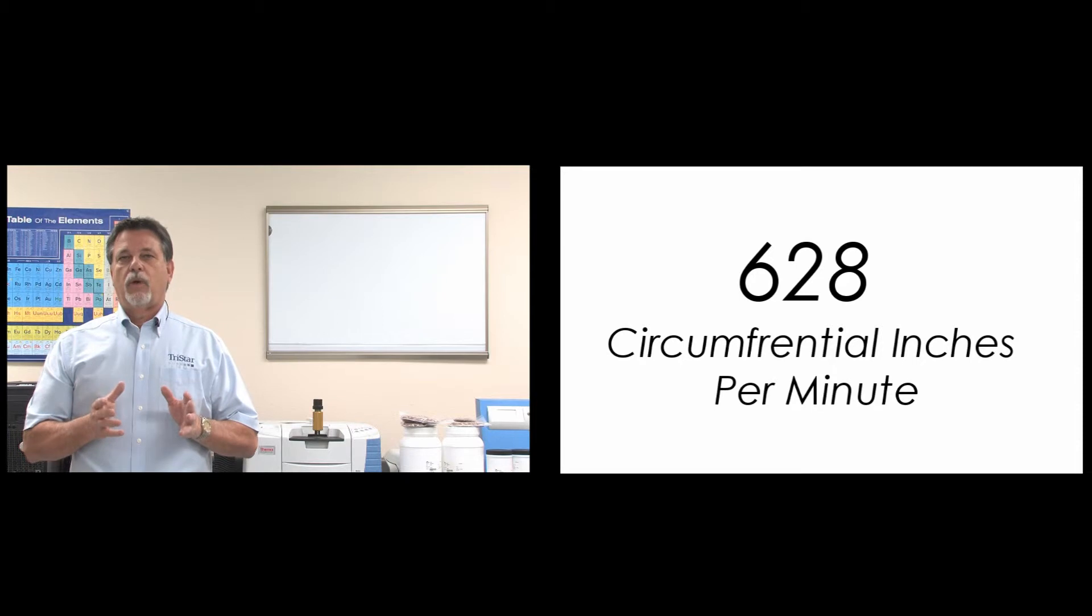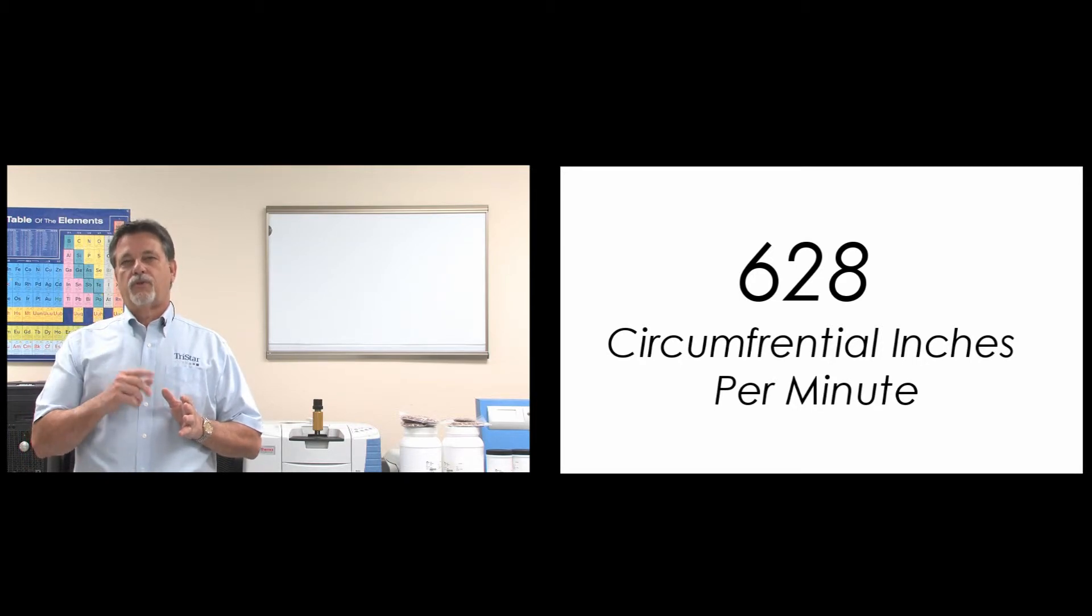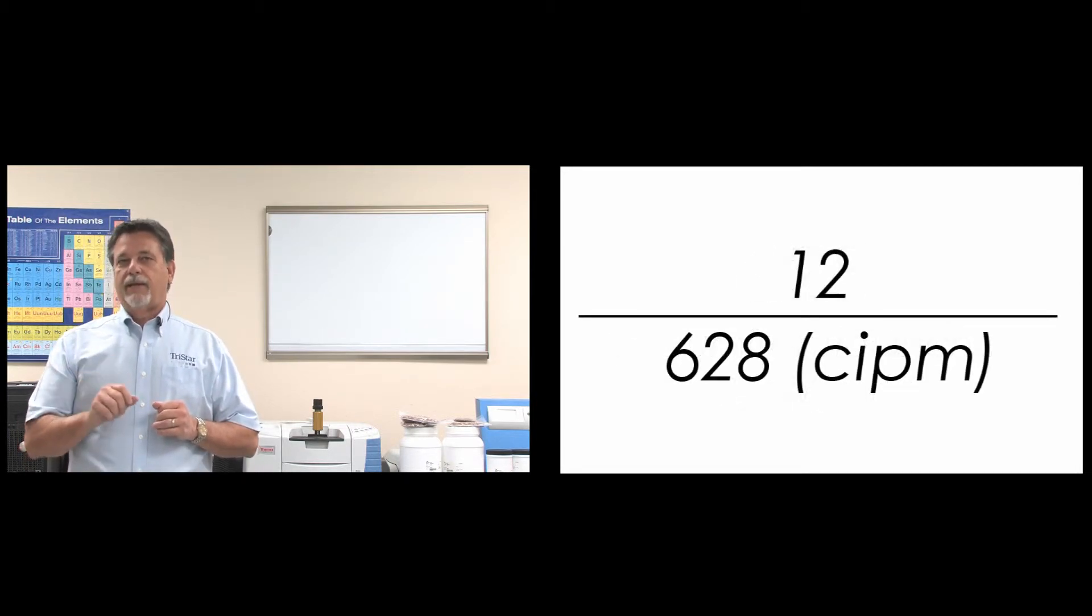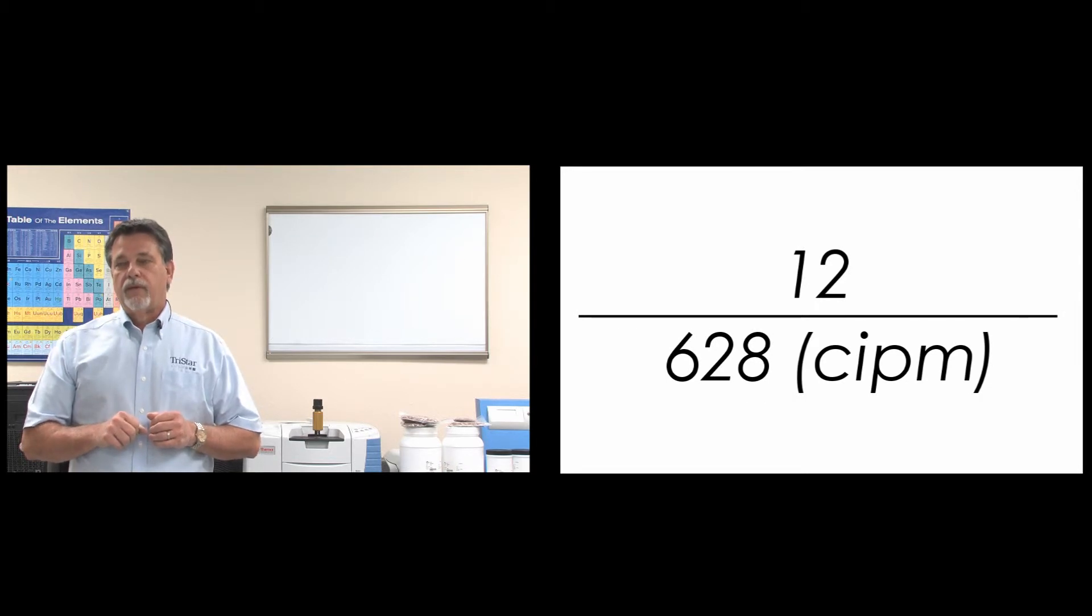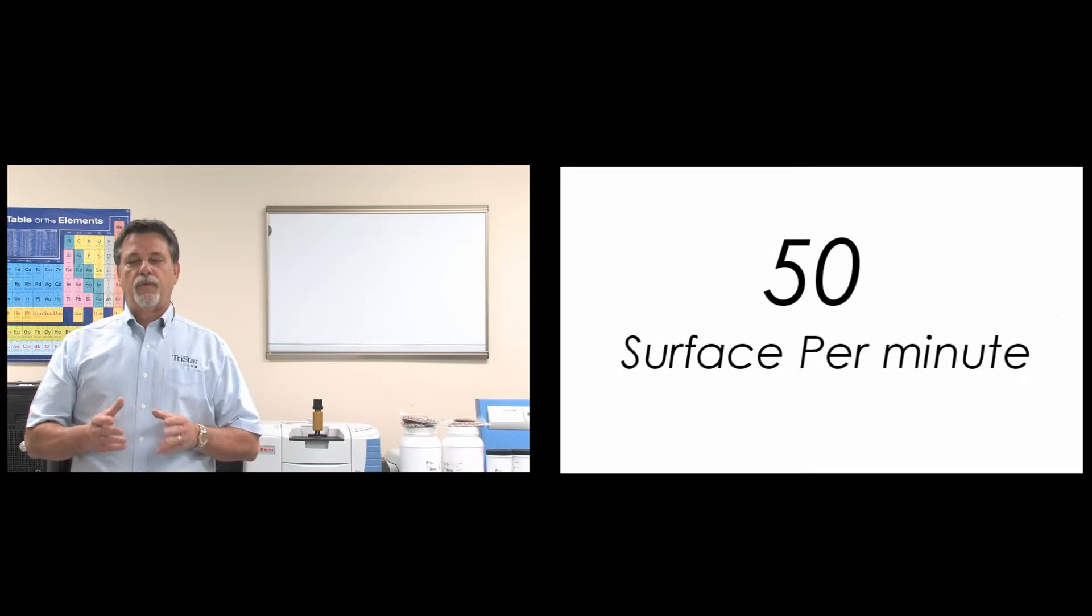So you have 6.28 times 100, or 628 circumferential inches per minute. Now divide that number by 12, and we basically get, again round numbers, about 50 surface feet per minute.